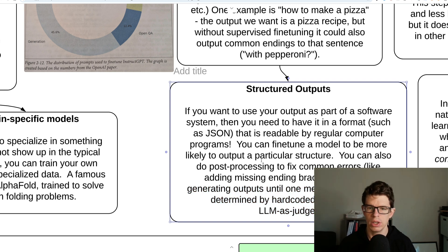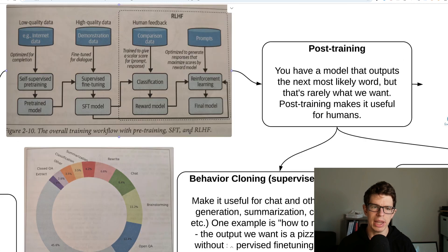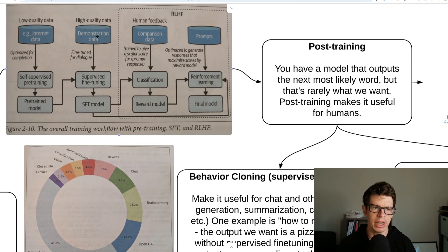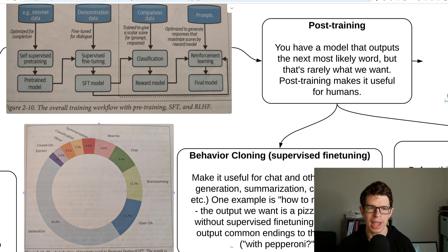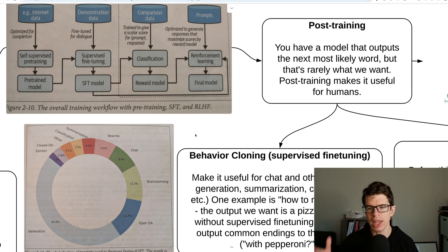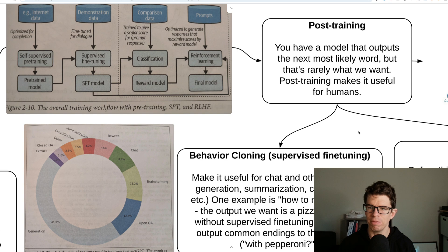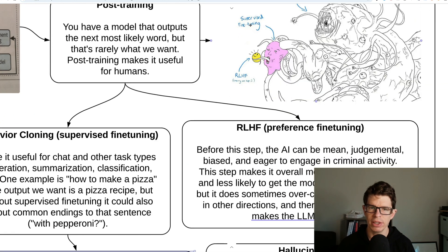Back to how it's trained. We take this demonstration data — it has a prompt and then an expected answer — and that expected answer is teaching it how to answer prompts of that type. The second part of post-training is the smiley face: RLHF — reinforcement learning from human feedback, also known as preference fine-tuning.